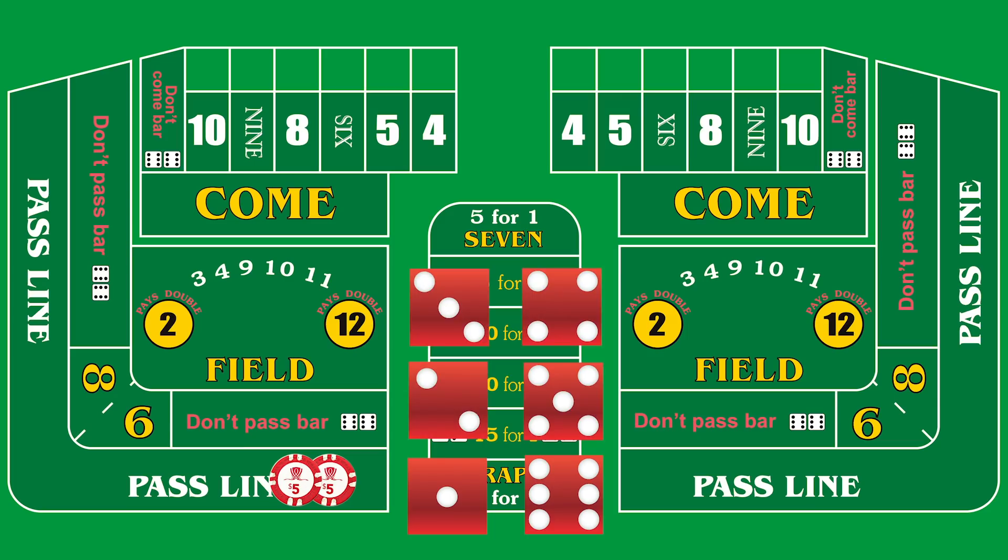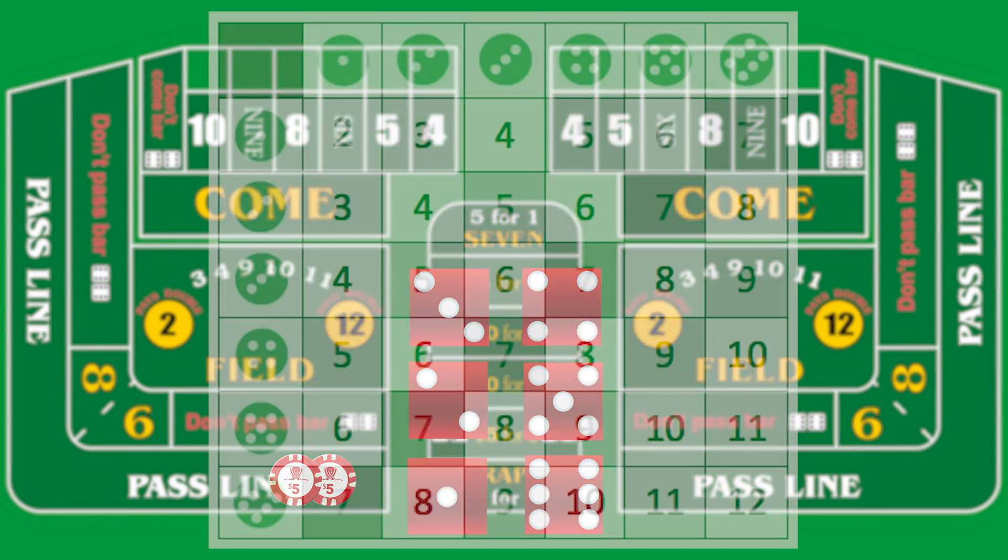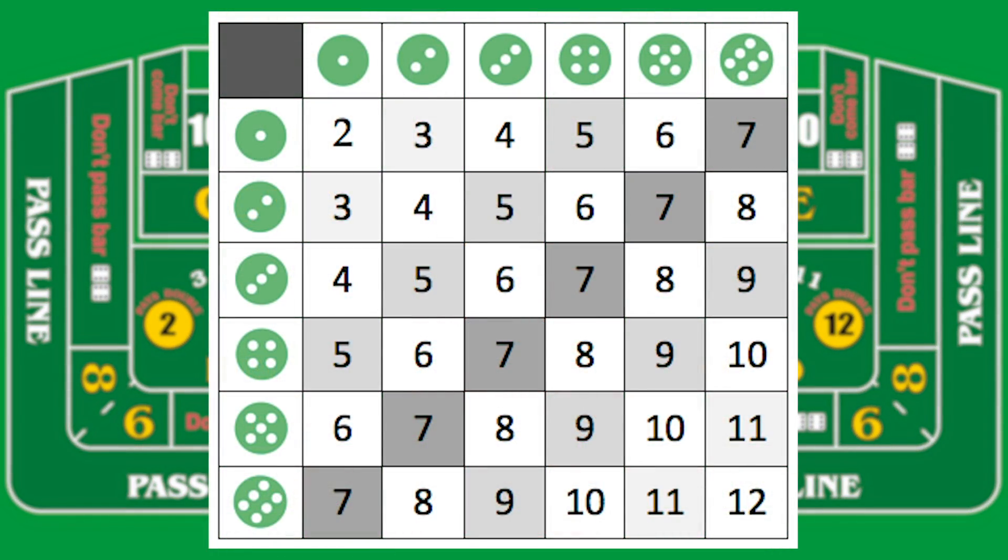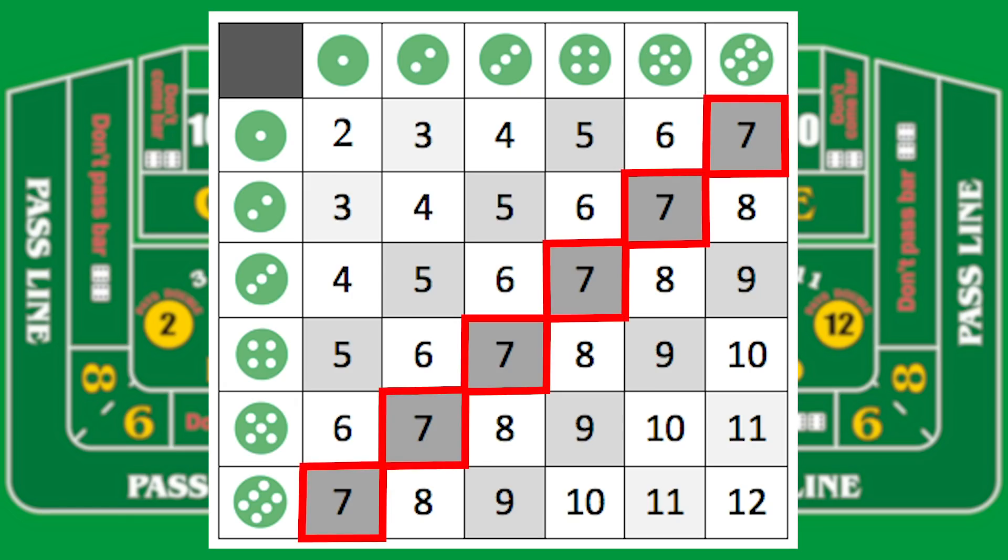Now the odds of rolling a 7 would be 1 out of 6. You can look at all the possible sums here, and we have 6 out of 36 of them are a 7.